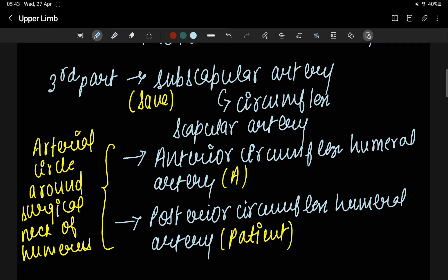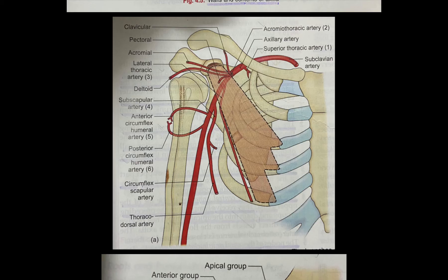Now in this diagram I will show all six branches of the axillary artery. From the first part, this one is the superior thoracic artery. From the second part, this one is the acromiothoracic artery, which divides into four branches: clavicular branch, pectoral branch, acromial branch, and deltoid branch. The next branch from the second part is the lateral thoracic artery — this one going down.